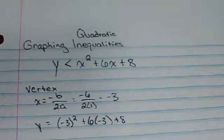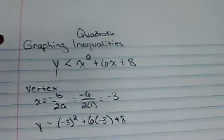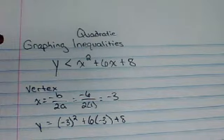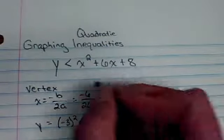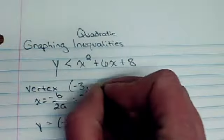Let me make sure I don't make any arithmetic mistakes. That would be 9 minus 18 plus 8, which gives me negative 1. So my vertex is at the point negative 3, negative 1.